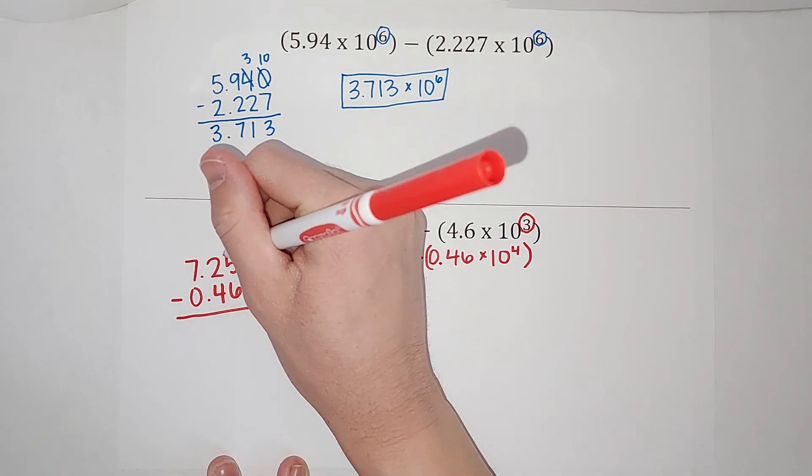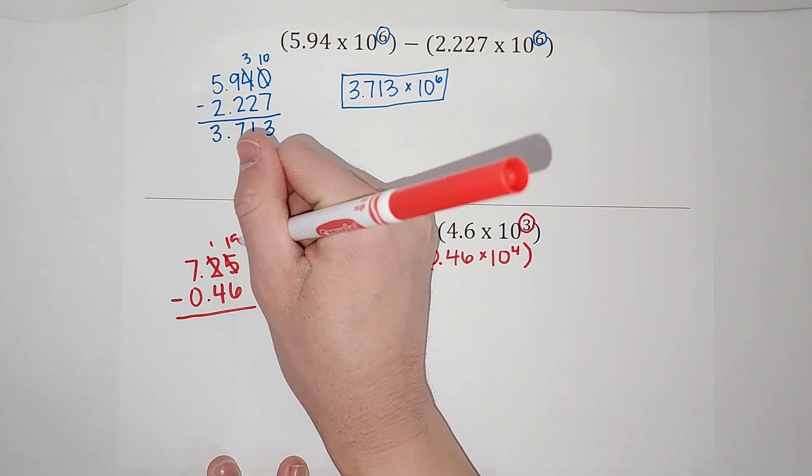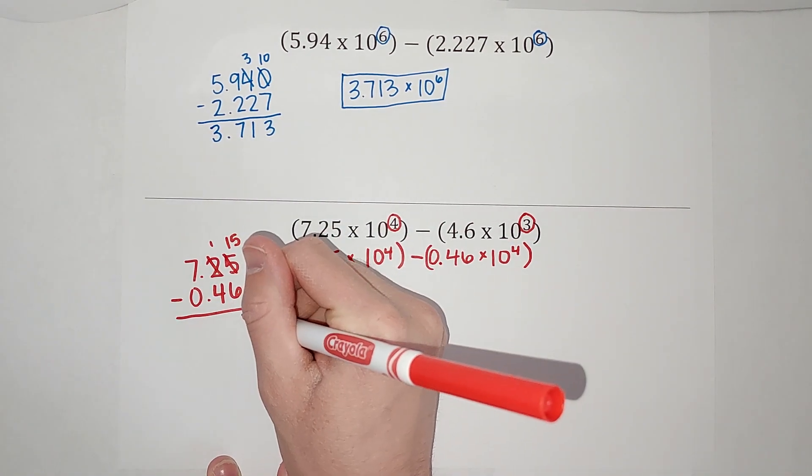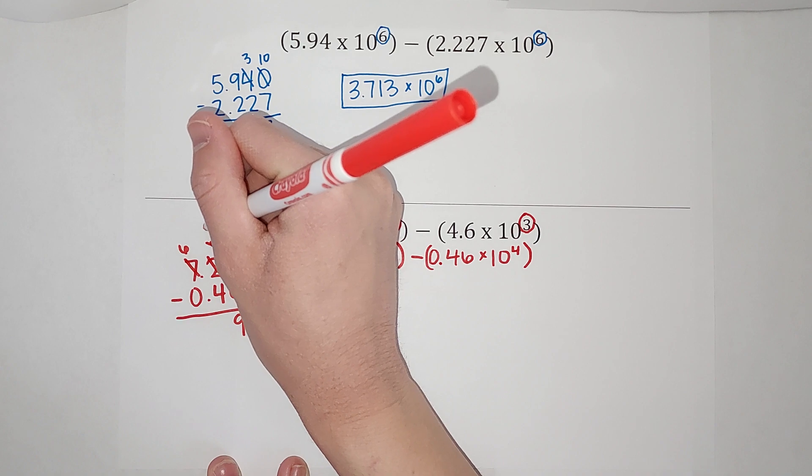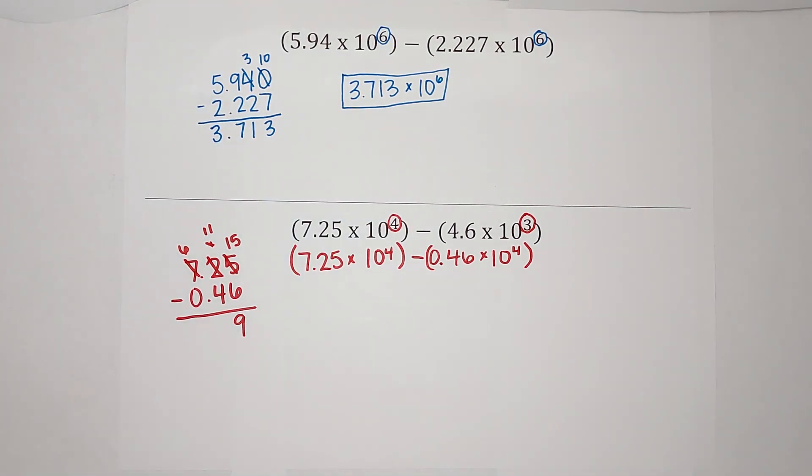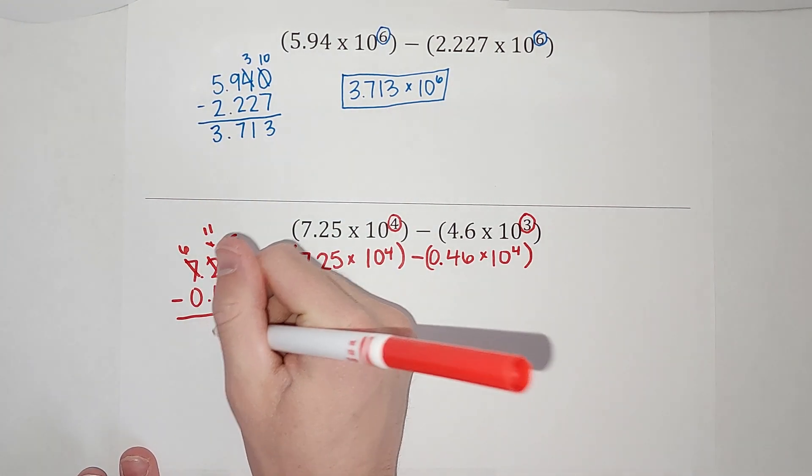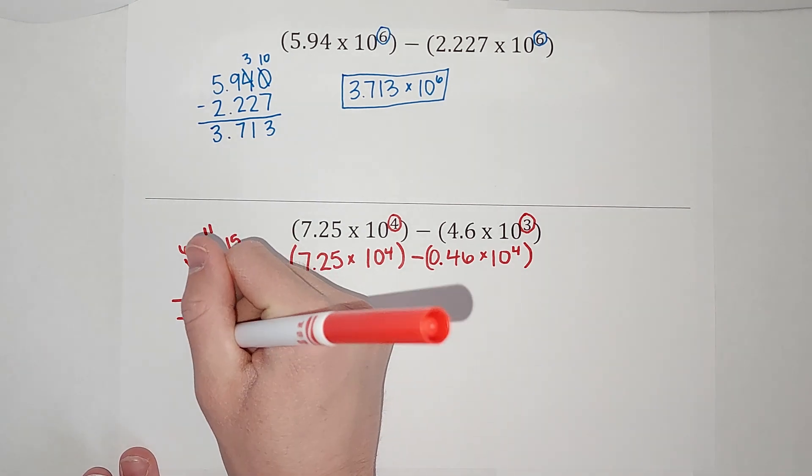So I'm going to do 7.25 minus 0.46. So I'm going to subtract these. Again, I got to borrow. So I end up with nine. I get to borrow again. 10. It's our favorite thing to do. We got seven.